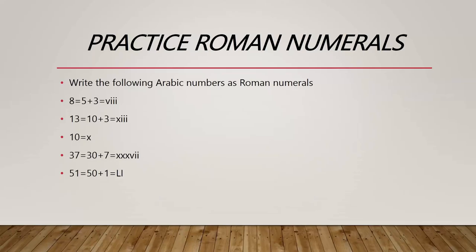For 8, we know that n is equal to 5 plus 3. When we go back to the table between the Arabic numerals and Roman numerals, we know that 5 is written as V and 3 is written as three I's. So we get 8 equal to VIII.